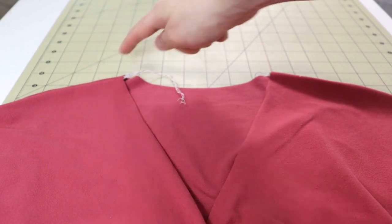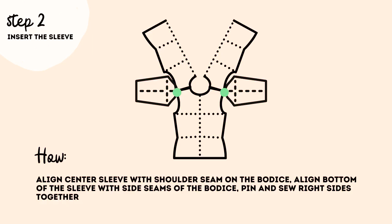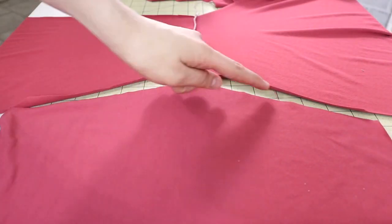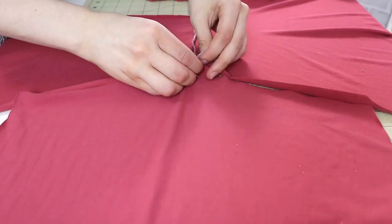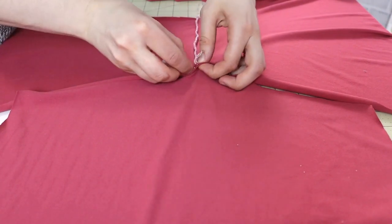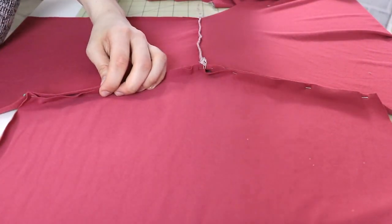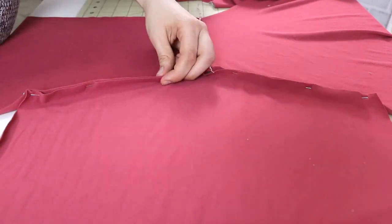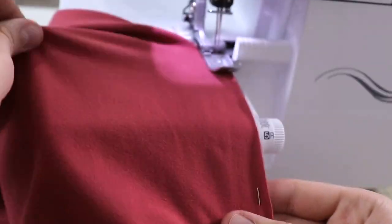Once your shoulder seams are done, let's go for step number two, and that is inserting the sleeve. Find the center of the sleeve and pin it right sides together to the bodice of your cardigan. Make sure that the center of the sleeve aligns with the shoulder seam of your cardigan. Pin everything in place and then sew it.